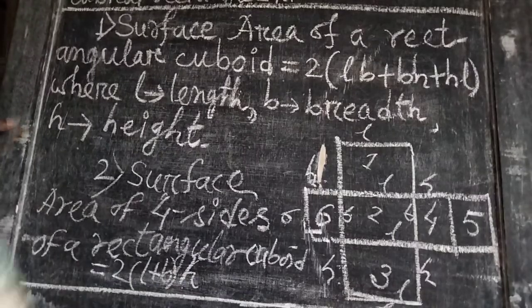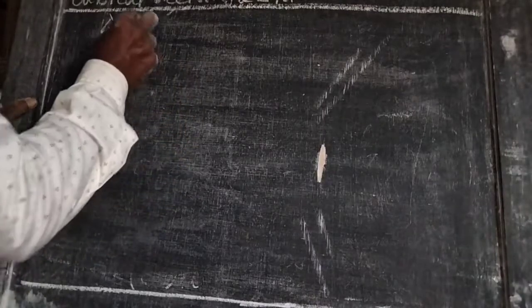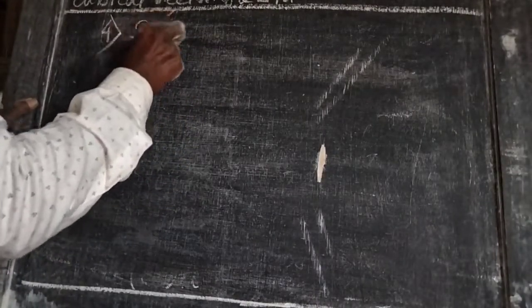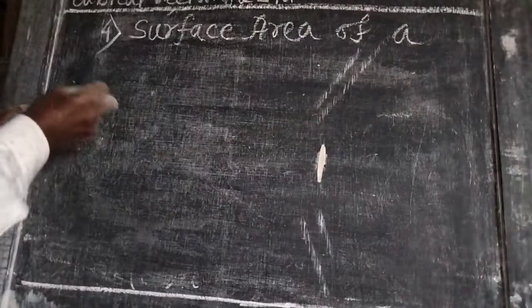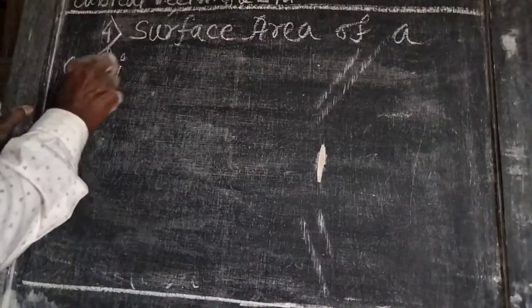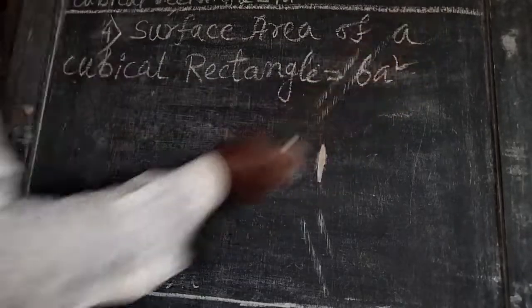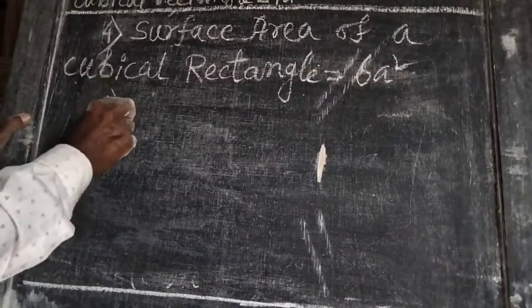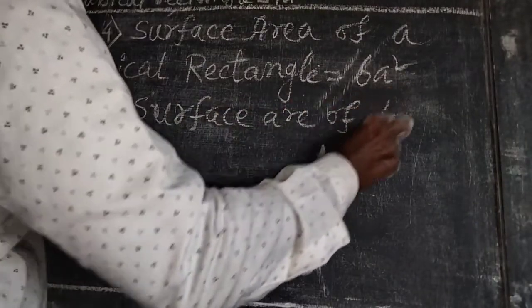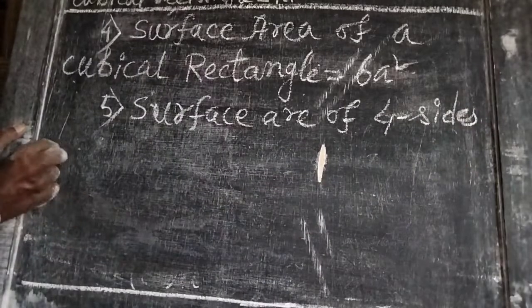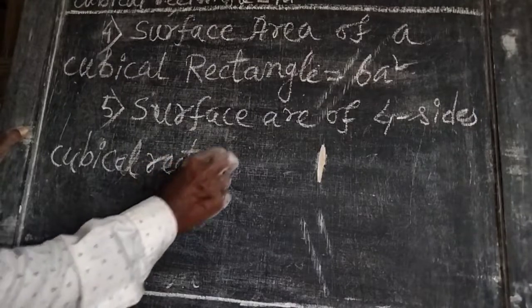The surface area of 4 sides of a rectangular cuboid is equal to 2 into (L plus B) into H.